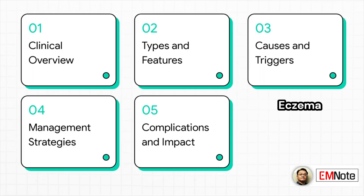Here's how we're going to break this down. We'll start with a clinical overview, then get into the specific types and their features. After that, we'll cover pathophysiology and triggers, move on to management strategies, and finally wrap up with complications and clinical impact.